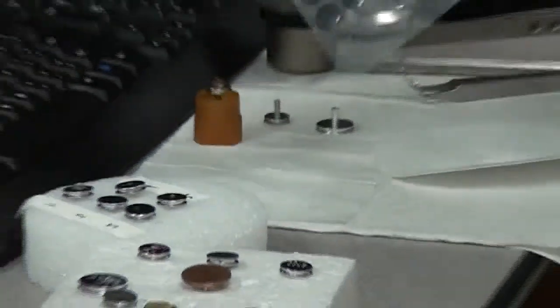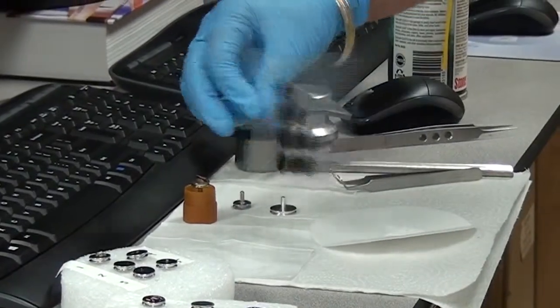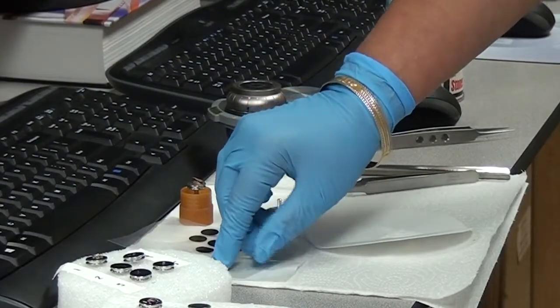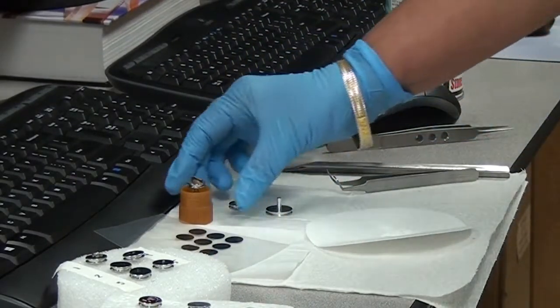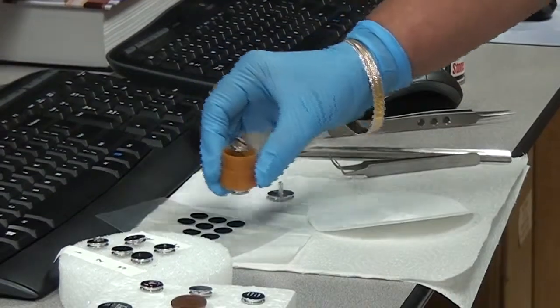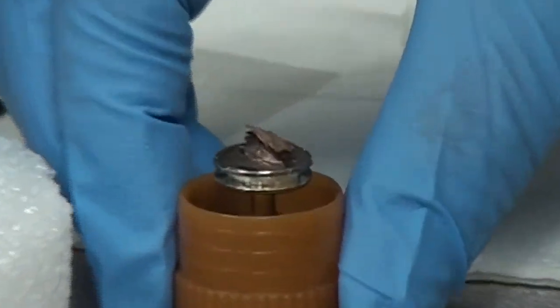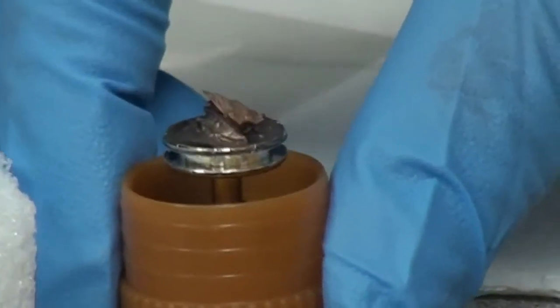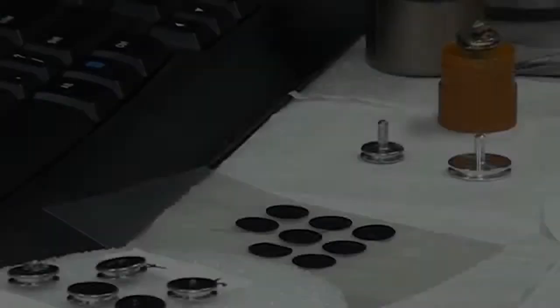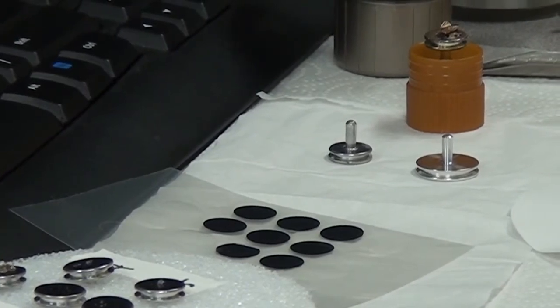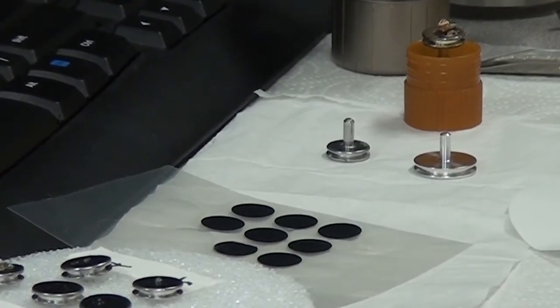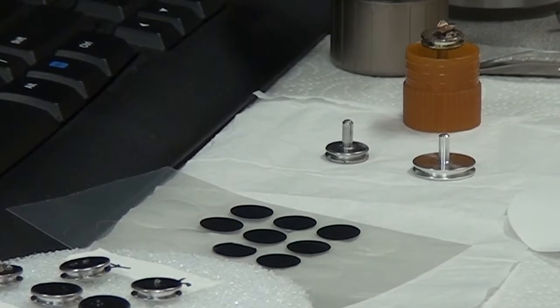This is the conductive double-sided adhesive carbon tape which is generally used to mount the samples. Some samples such as bugs or other biological specimens are made conductive by sputtering with gold or palladium. All samples must be conductive or made conductive to prevent buildup of excess electrons and charge on the surface of the sample.